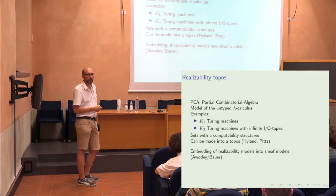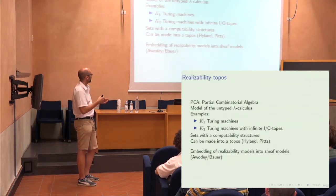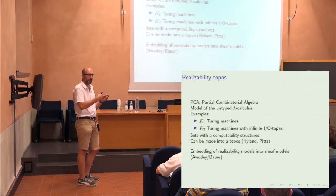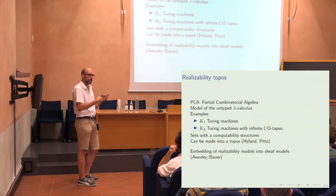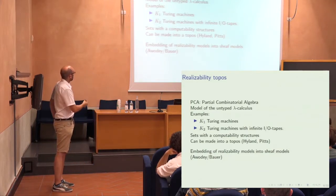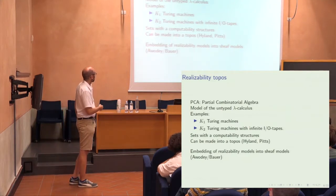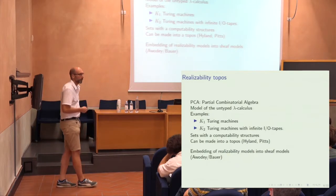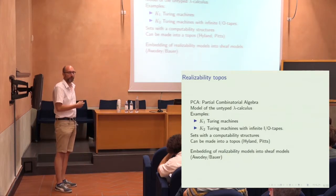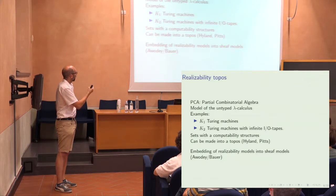In K2, after having read a finite amount of input you need to give some kind of output — you cannot wait forever. What you get in these toposes is a notion of sets, but every set carries some kind of computability structure. There's beautiful work by Hyland and then Andy Pitts showing that this can actually be made into a topos, with two different constructions. This is a well-studied part of topos theory and gives a very different class of models from the Grothendieck toposes.